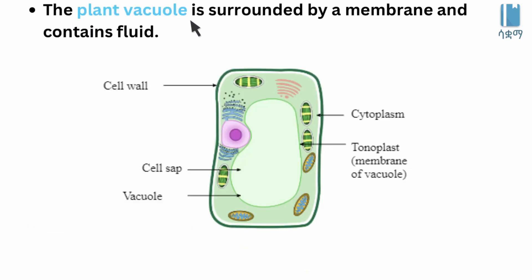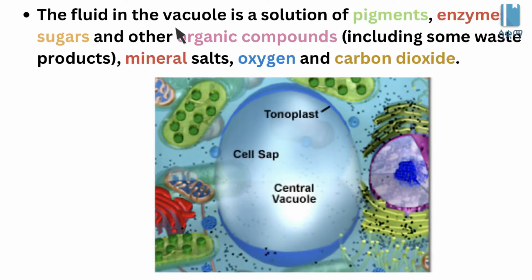The plant vacuole is surrounded by a membrane and contains fluid. It is a large permanent vacuole. The fluid in the vacuole is a solution of pigments, enzymes, sugars, and other organic compounds.